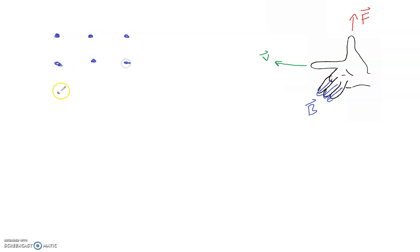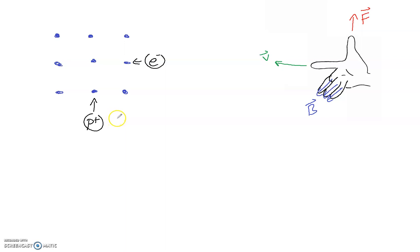I'm going to draw my magnetic field and do some double duty here. First things first, we're going to have a proton coming in this way and an electron coming in this way. We'll keep them totally separate, using the same field for the two charges. Let's say our proton is coming in at 82,000 meters per second, and the field is 0.14 Teslas. Everything's coming in at a right angle, so sine theta for all our forces equals one.